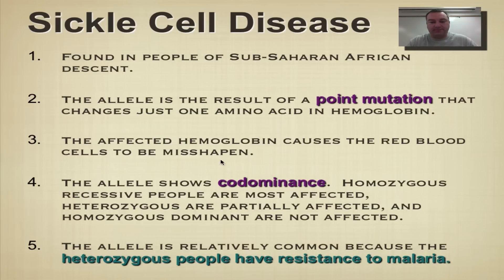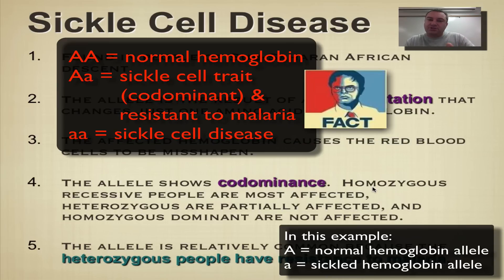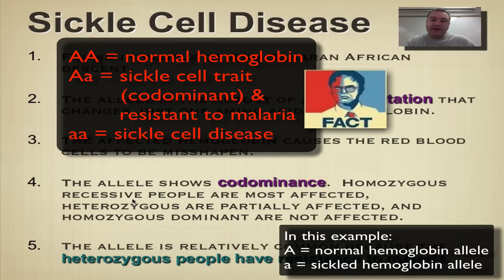The hemoglobin changes into a half-moon shape. This allele shows codominance, meaning heterozygous individuals express both alleles. If you are homozygous for the sickle allele, all of your red blood cells will be affected. If you're heterozygous, half of your red blood cells will have good hemoglobin and the other half will have bad hemoglobin, so you're only partially affected. If you're homozygous for the normal allele, none of your red blood cells are affected.